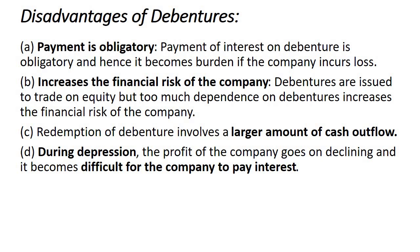During depression, the profit of the company declines and it becomes difficult to pay interest. If an organization does not have a stable income and experiences high fluctuation, it should not include too many debentures in its capital structure. For example, a company with a stable income of 200 rupees can pay interest more easily than a company whose income fluctuates from 10 rupees to 500 to 1000 rupees — such a company cannot be sure it will be able to pay interest every year.